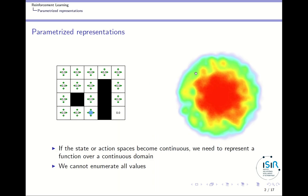So far we have dealt with problems where you have a discrete set of states and a discrete set of actions, so you can record one value for each state-action pair. If we switch to a continuous domain, either for state or for action, we cannot represent a function of that continuous domain by storing a value for each possible variable, because we cannot enumerate all values for all the states and actions — there are an infinity of such states or actions.